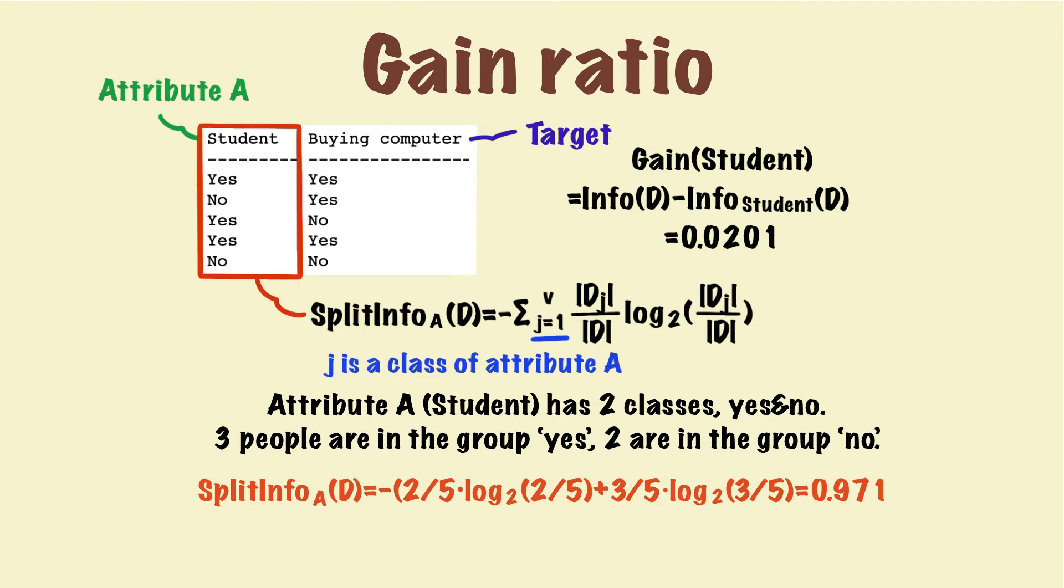If you look carefully, you can see we only use attribute student to calculate the split information. So we actually don't need the target attribute here. And that's it. Gain ratio is the information gain divided by split information, which turns out to be 0.0219.